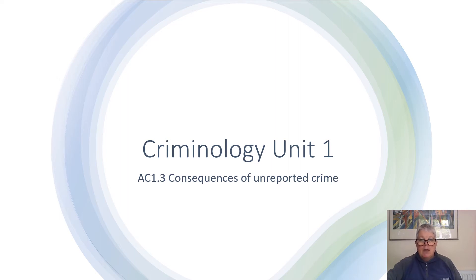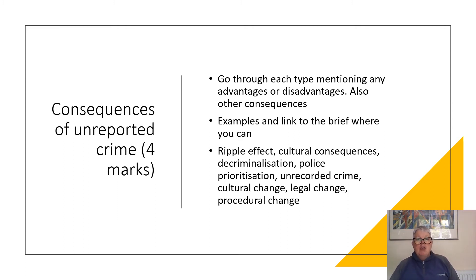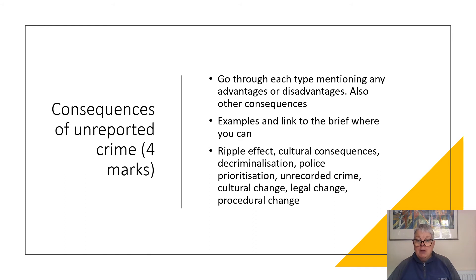There are eight consequences of not reporting a crime, listed on the third bullet point here. Take each one in turn, define it, give an example of it, and come up with a consequence. The consequence is likely to be negative, but it could be positive. Explain what you mean.